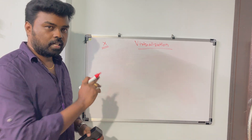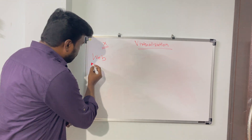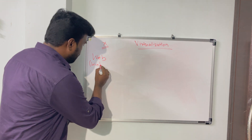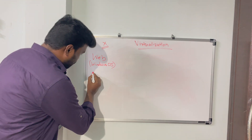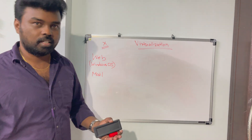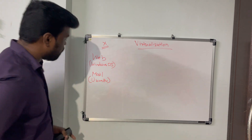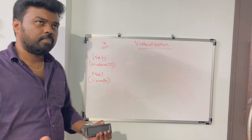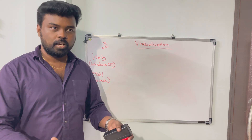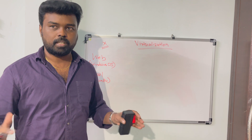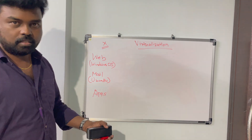Consider this organization has certain applications — they have a web application, which could be their organization's website. This web application might need a Windows operating system. The same organization might also have a mail application, because employees need to communicate with each other, and consider the mail server needs Ubuntu. Similarly, they also have applications to keep track of employee data, attendance, and performance — let's just call it Apps, and let's consider Apps needs Red Hat operating system.